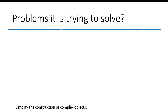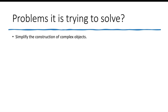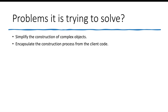So by doing this, what problem are we trying to solve? We are trying to simplify the construction of the Pizza object, because Pizza is a complex object. Any complex object creation — where many steps are involved — can be simplified using the Builder Design Pattern. Secondly, it encapsulates the construction process from the client code. Currently the client code is bothered about which constructor to call to create the Pizza object, but by separating out that logic, the client code no longer needs to worry about which constructor to call.